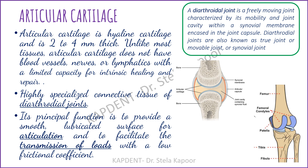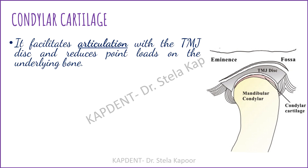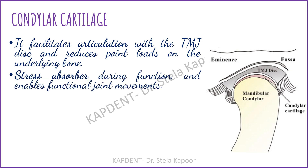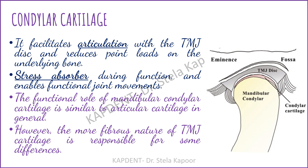The principal function of articular cartilage is to provide a smooth lubricated surface for articulation and to facilitate load transmission with a low frictional coefficient. The condylar cartilage facilitates articulation with the TMJ disc and reduces point load on the underlying bone. During function it acts as a stress absorber and allows functional joint movements. The functional role of the mandibular condylar cartilage is very similar to articular cartilage elsewhere, though differences exist due to its more fibrous nature.